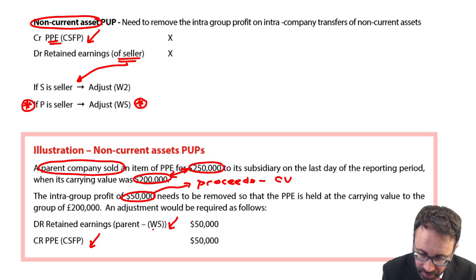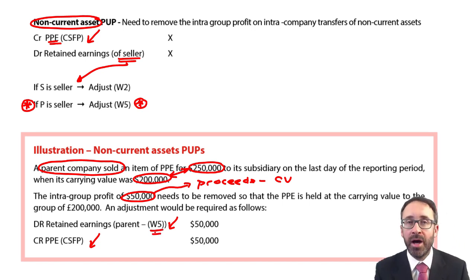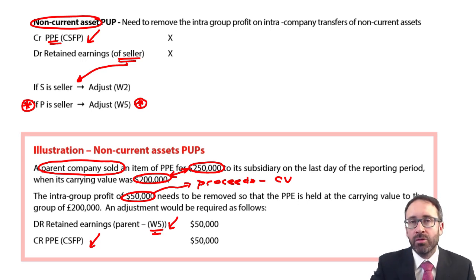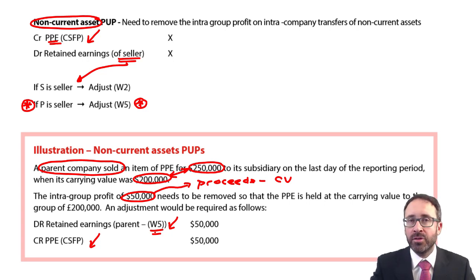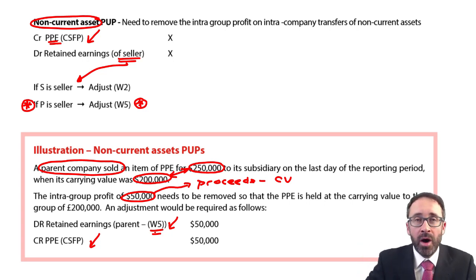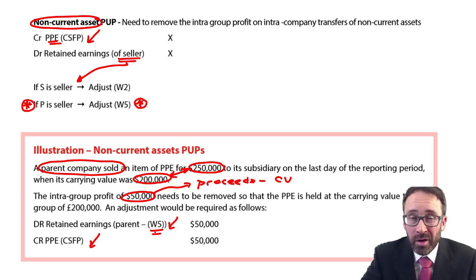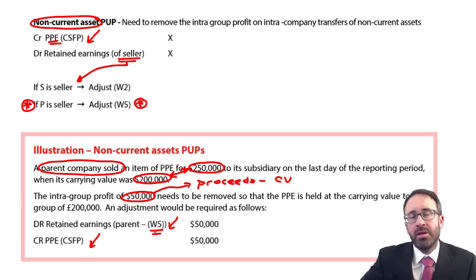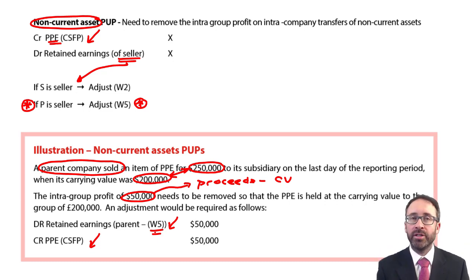As mentioned, this topic is very rarely examined — it has appeared, but it doesn't crop up as frequently as provisions for unrealized profit on inventory. Please just have an awareness of it just in case. If you find it difficult in the exam, just move on — it's only going to be one mark, maybe one and a half, so there's nothing too much to get concerned about. Just have a general awareness of it.